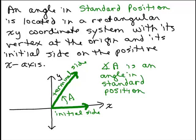We are almost done. An angle in standard position is located in a rectangular x-y coordinate system with the vertex at the origin and its initial side on the positive x-axis. I've got this thick coloring here to show you this angle A. Notice the initial side is on the x-axis and the vertex is at the origin. That is called an angle in standard position.